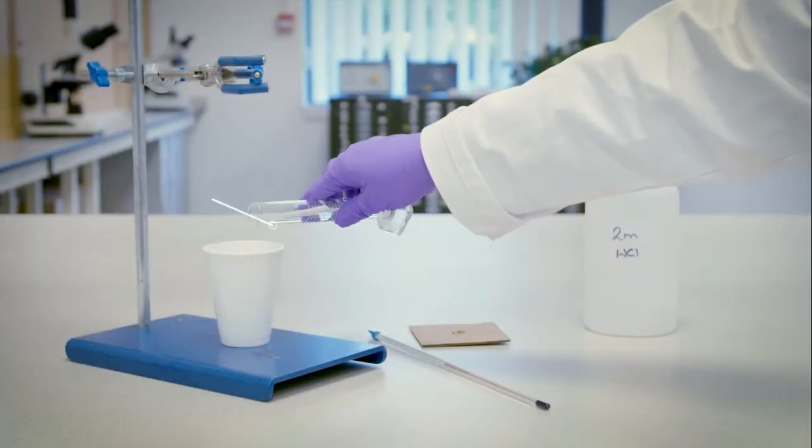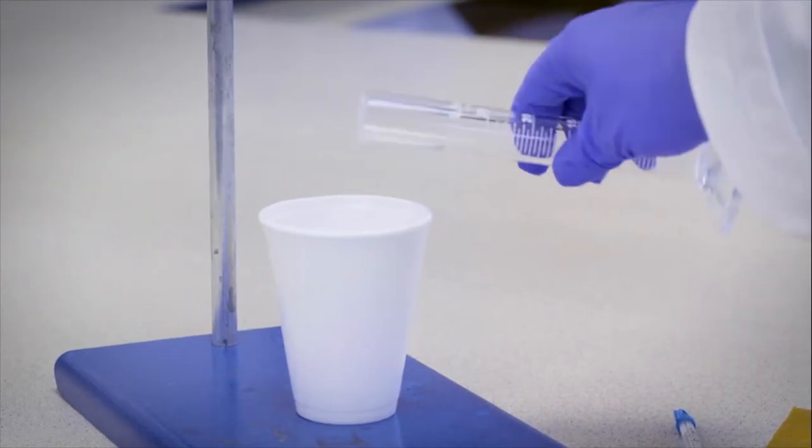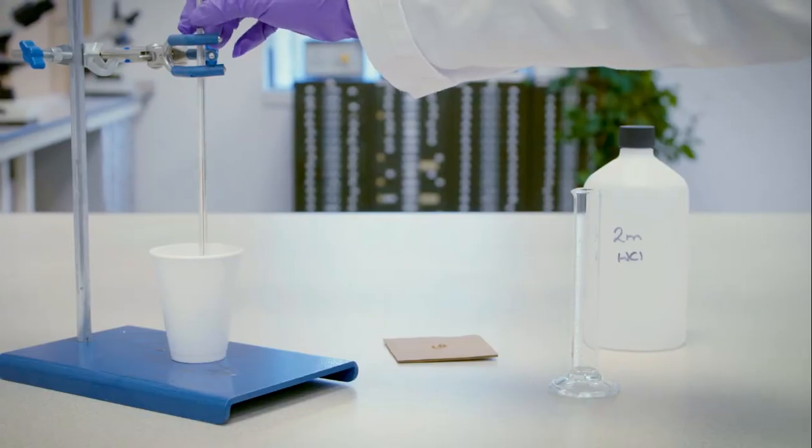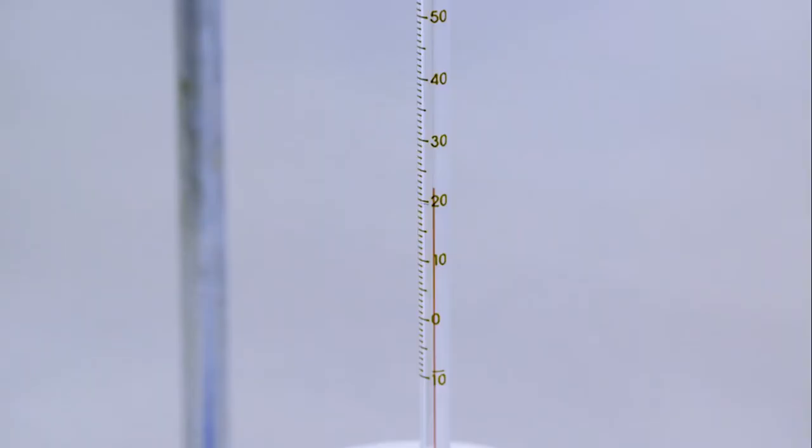First, delta H1 is determined. Hydrochloric acid is added to a clean polystyrene calorimeter. A thermometer is added, which is supported gently by the clamp. This prevents the reaction mixture from tipping over. The initial temperature of the hydrochloric acid is recorded.